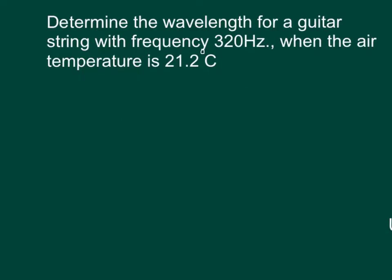Okay, so we want to be solving for the wavelength of a guitar string. The guitar string has a frequency of 320 hertz, and the air temperature in the room is 21.2 degrees Celsius.